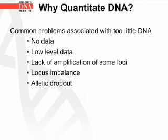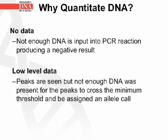At the other end of the scale, there are common problems associated with too little DNA. You can end up with no data, low level data, lack of amplification of some loci, locus imbalance, and allelic dropout. No data simply means there is not enough DNA input into the PCR reaction and therefore you get a negative result. Low level data means that peaks are seen but not enough DNA was present for the peaks to cross the minimum threshold and be assigned an allelic call.